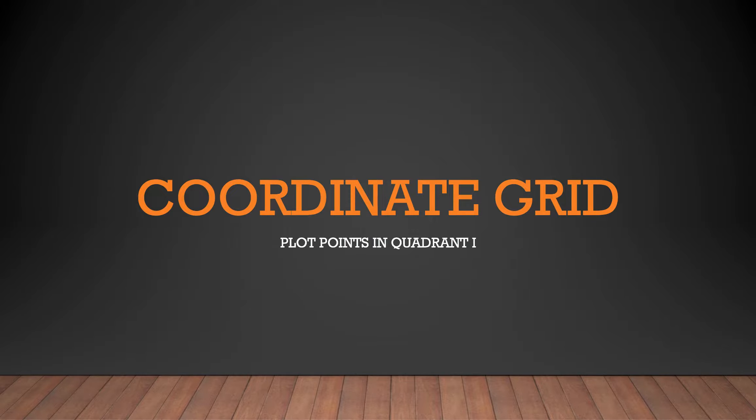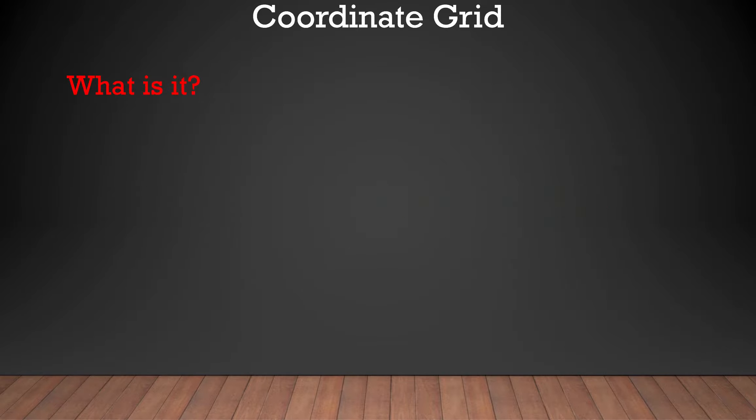Coordinate grid. Plot points in quadrant 1. What is it? Intersection of two lines, one horizontal and one vertical.